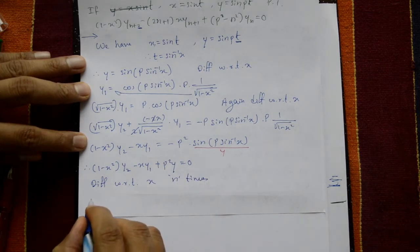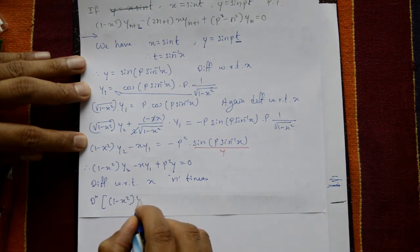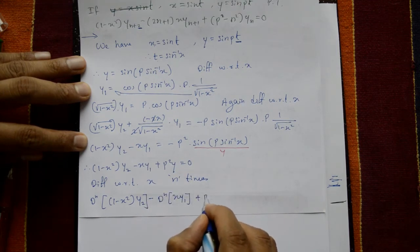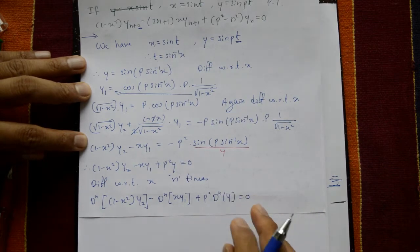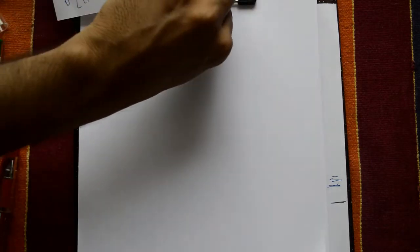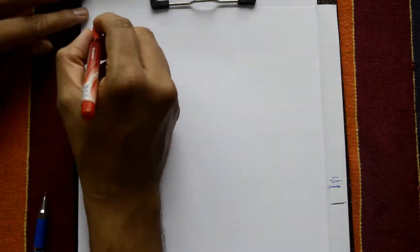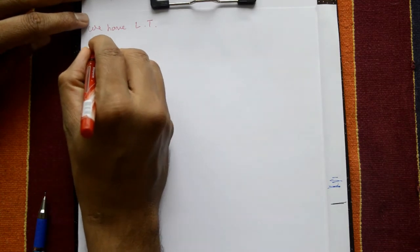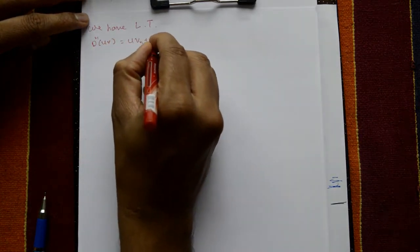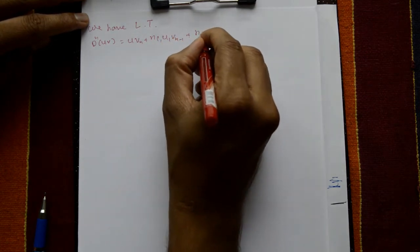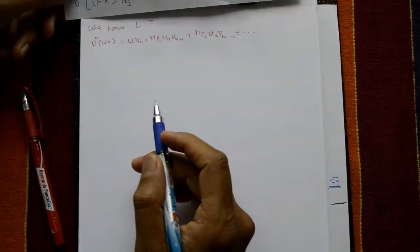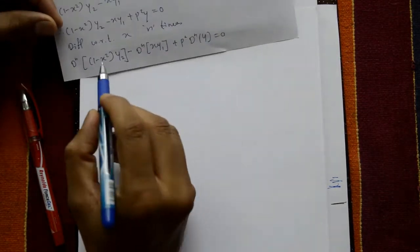Now differentiate n times with respect to x. We apply Leibniz theorem to each term: dⁿ[(1 - x²) y₂] − dⁿ[x y₁] + p² · dⁿ[y] = 0. Leibniz theorem states: dⁿ(u·v) = u·vₙ + nC1·u₁·vₙ₋₁ + nC2·u₂·vₙ₋₂ + ...